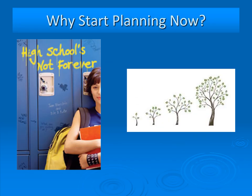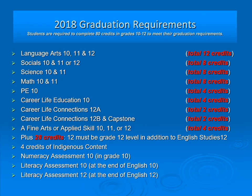Why are we planning now? It takes a while to get all these grad requirements done. By the time you graduate, you must successfully pass Language Arts — English 10, 11, and 12. You must pass Social Studies 10, 11, or 12. You must also successfully complete Science 10 and a Science 11, a Math 10, a Math 11, and PE 10.